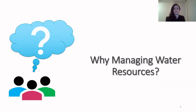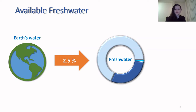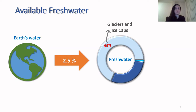Let's start with finding out why we need to manage our water resources. When we look at Earth, we can see water everywhere. So why do we need to manage water? Well, the fact is that from all the water that we can see, only 2.5% is fresh water, meaning that the rest is salt water and not suitable for human usages like drinking or irrigating crops. Even from this 2.5% of fresh water, 69% is in the form of glaciers and ice caps, not easily accessible.